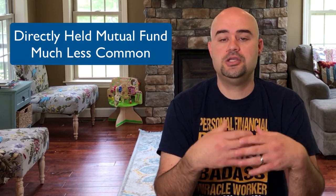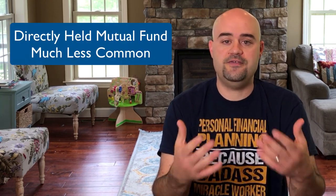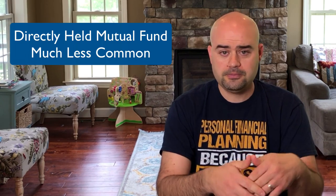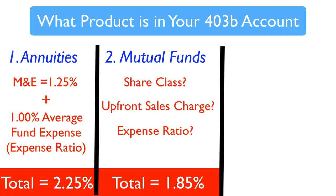The second option is mutual funds. If you have an account directly with Invesco — which was formerly Oppenheimer — there are different types of share classes, which makes it a bit more confusing. You have to do a little research to figure it out. I'm using 1.85% here as a ballpark figure for C shares, and I'm making a lot of assumptions going through these numbers.